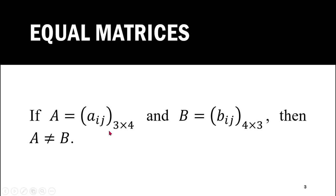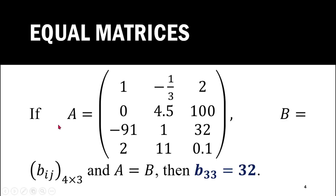For example, if A = [a_ij] is a 3×4 order matrix and B = [b_ij] is a 4×3 order matrix, then these two matrices cannot be equal because their orders are different. If A is a 4×3 matrix shown in this slide and B = [b_ij] is also of order 4×3, and if A = B, then obviously the corresponding elements of A and B are equal.